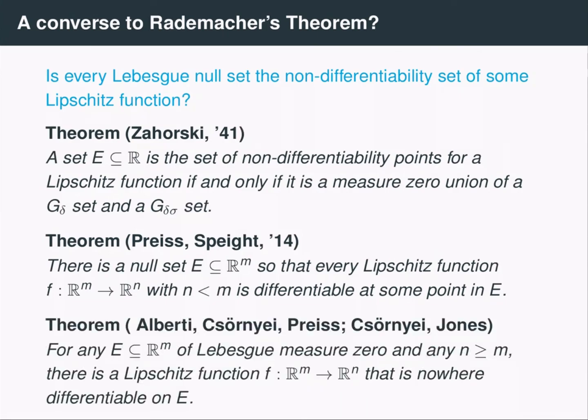On the other hand, there's a famous theorem by Alberti, Csörnyei and Preiss, and then improved by Csörnyei and Jones, that says for any Lebesgue measure zero set of R^m and any integer n at least m, we can find a Lipschitz function f from R^m into R^n that is nowhere differentiable along this set.